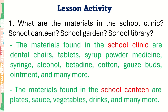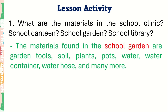The materials found in the school canteen are plates, sauce, vegetables, drinks, and many more. The materials found in the school garden are garden tools, soil, plants, pots, water, water container, water hose, and many more.